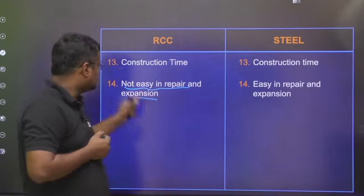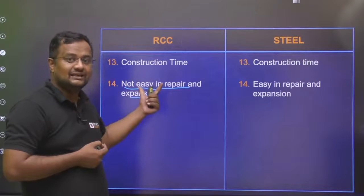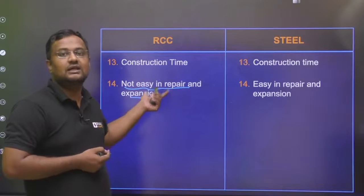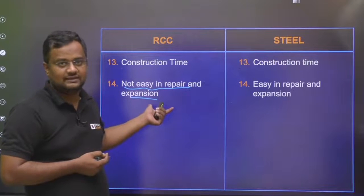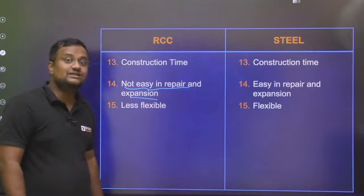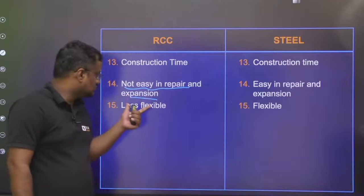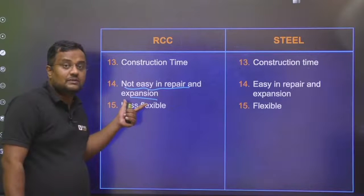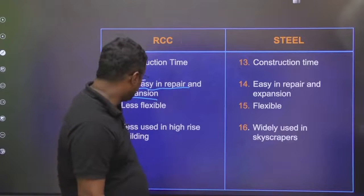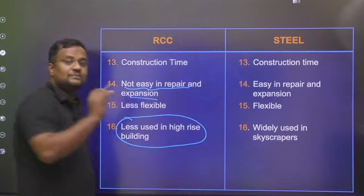RCC is not very easy to repair and expand — some pre-construction provisions have to be made by the earlier designer. Steel is easier to repair and expand. RCC is less flexible, which is why there may be brittle damage in case of an earthquake, whereas steel is comparatively more flexible.